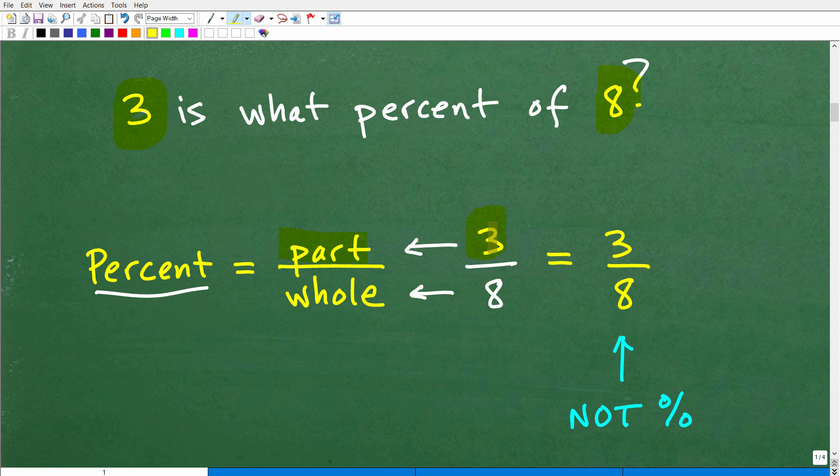The part here is 3, the whole is 8. How much is 3 out of 8? That's how we're trying to express this, and we want to express this in terms of percent. How much is 3 out of 8?